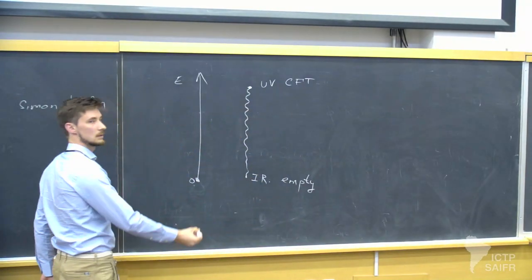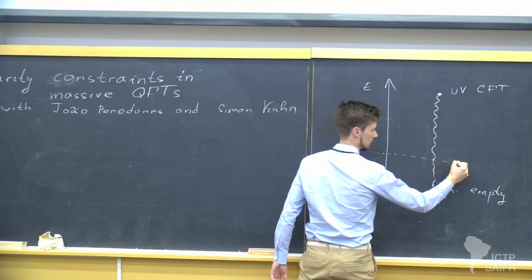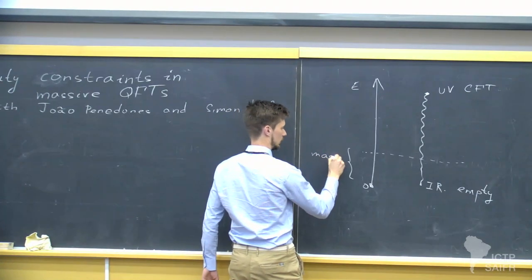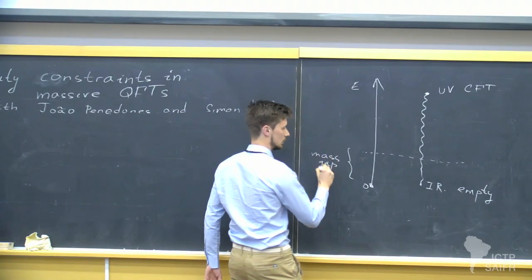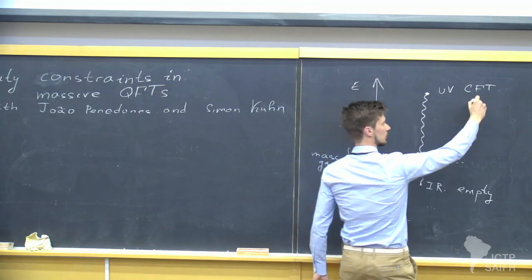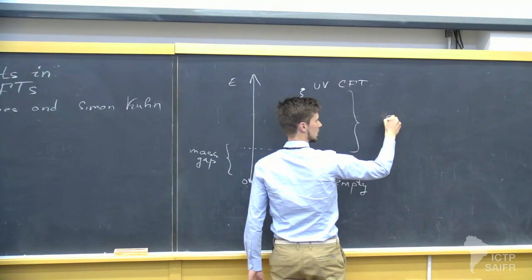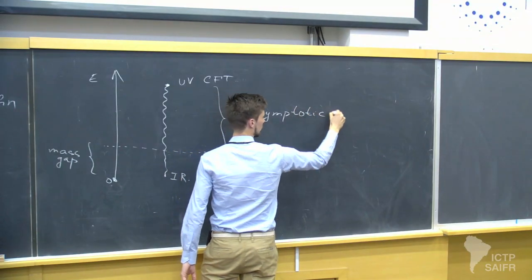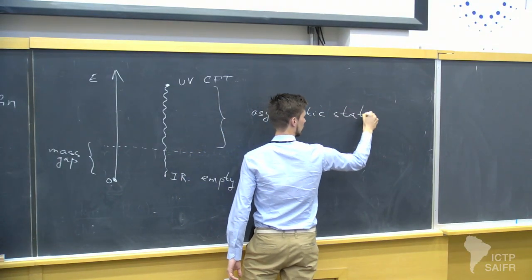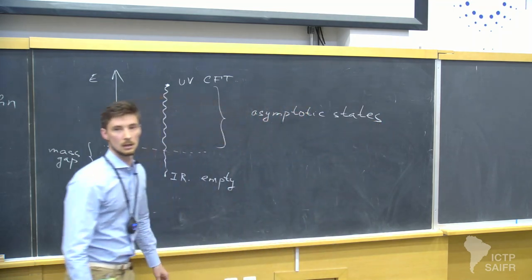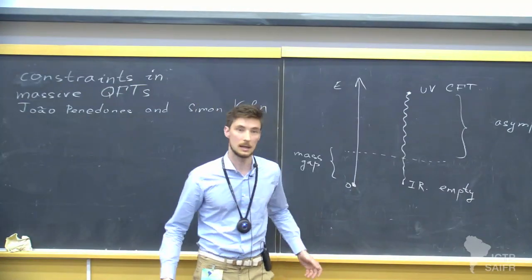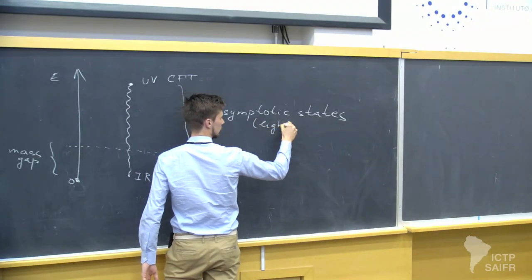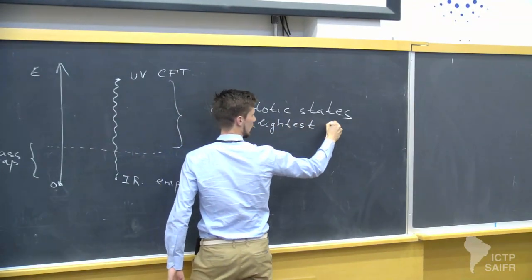This means that I have at some energy here, which is the mass gap, the first particles. So in this range of energies I have asymptotic states of particles. And I will assume that the lightest asymptotic state has mass small m.